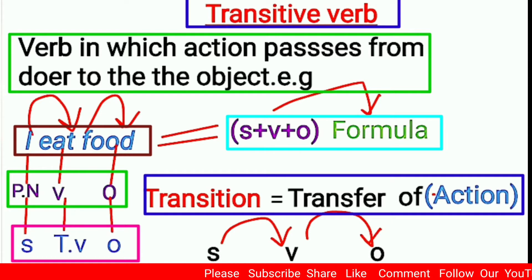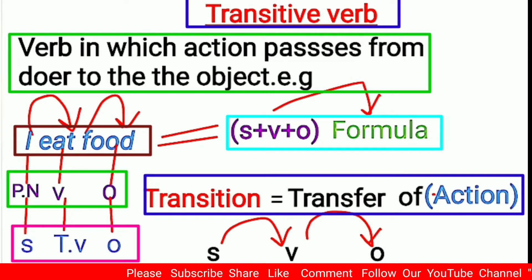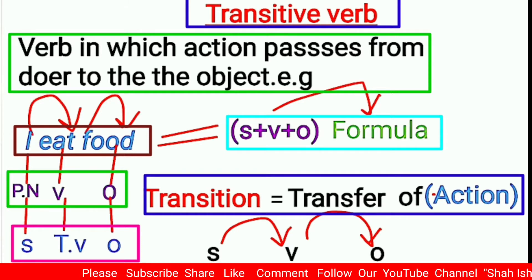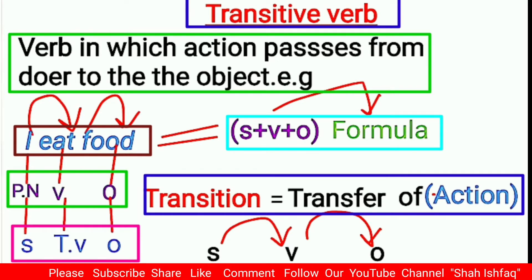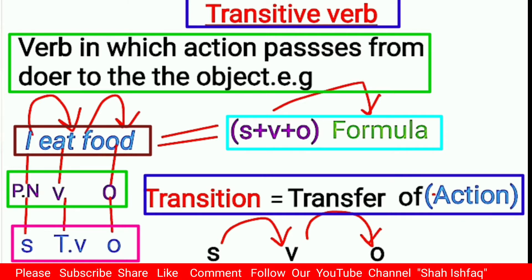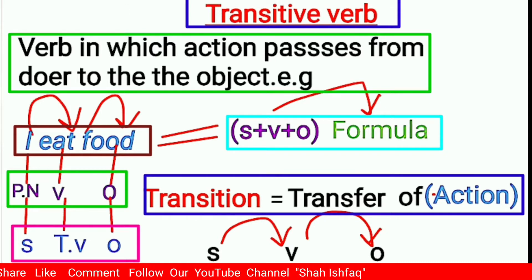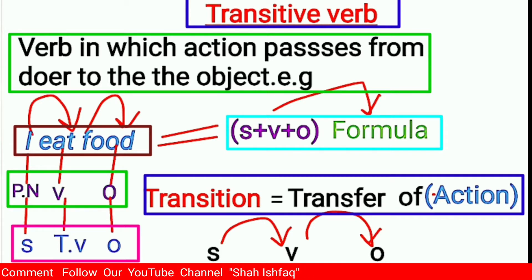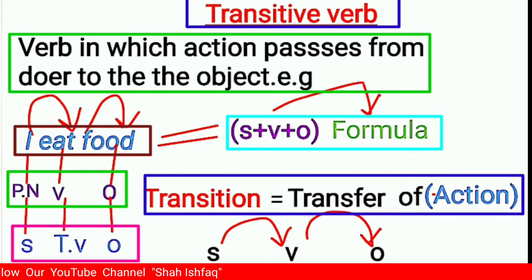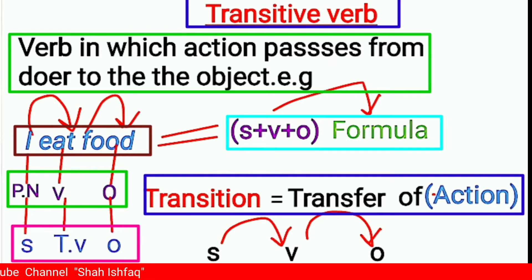Friends, today we will cover transitive verbs. Transitive means transition, and transition means transfer. So the action transfers from the subject to the object. That is what a transitive verb is.